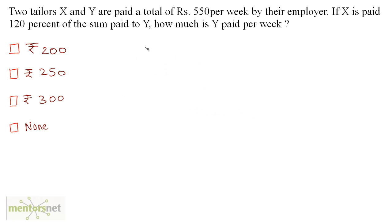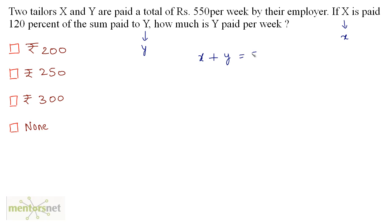Two tailors x and y are paid a total of 550 rupees per week by the employer. If x is paid 120% of the sum paid to y, how much is y paid per week? Let us assume that the sum paid to x be x and the sum paid to y be y. We have been given that the two tailors x and y are paid a total of 550 rupees per week. So we have x plus y is equal to 550.